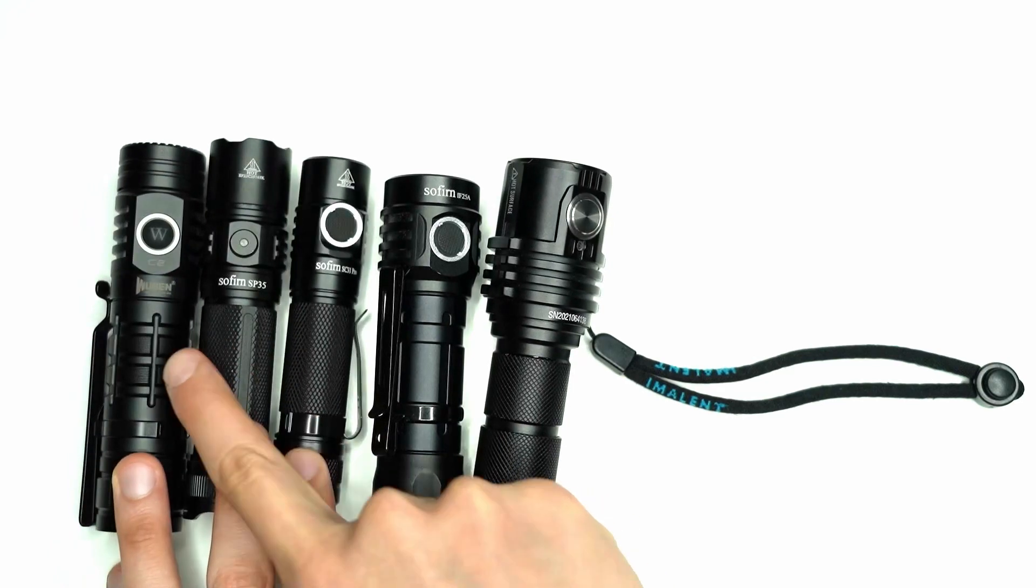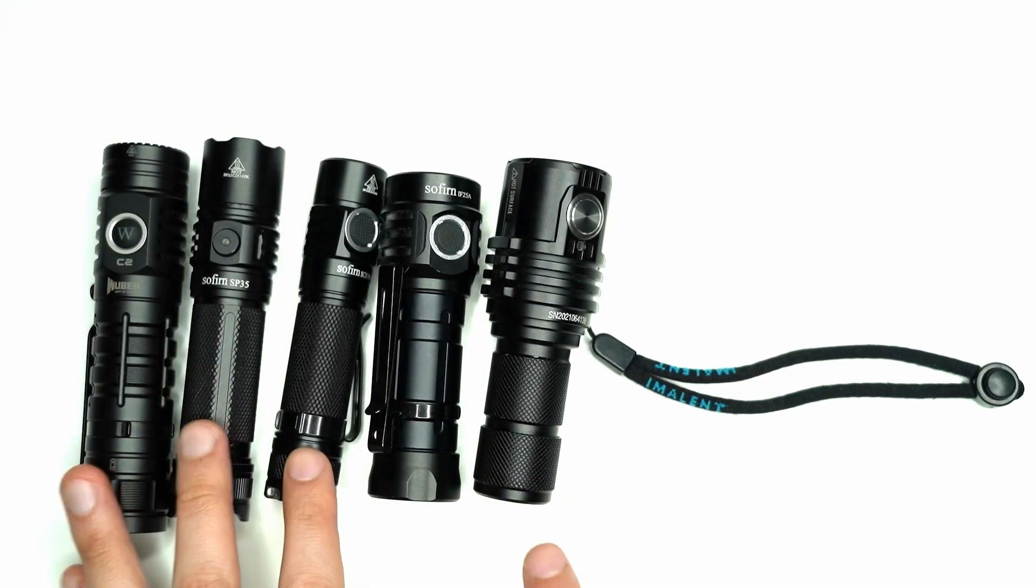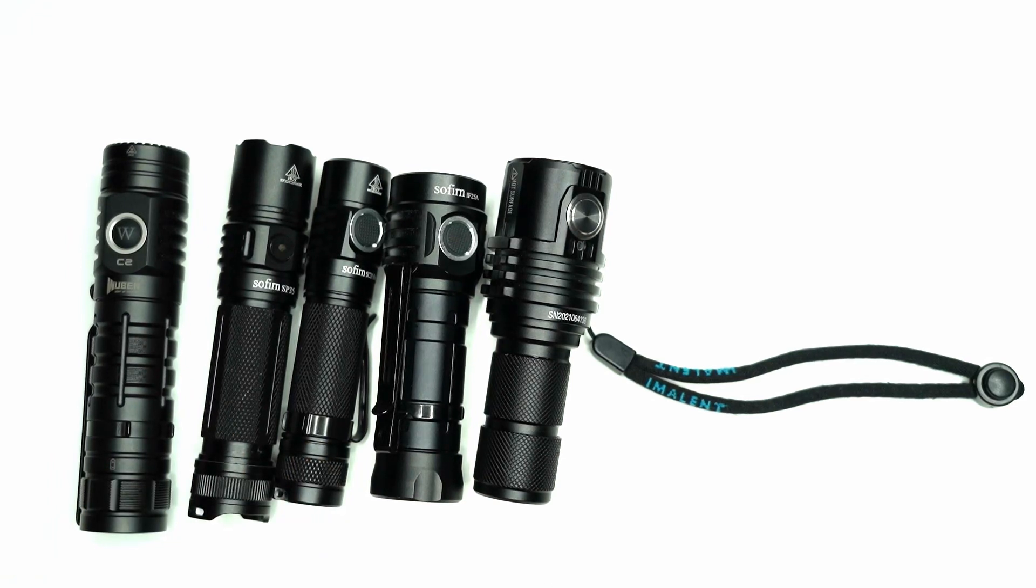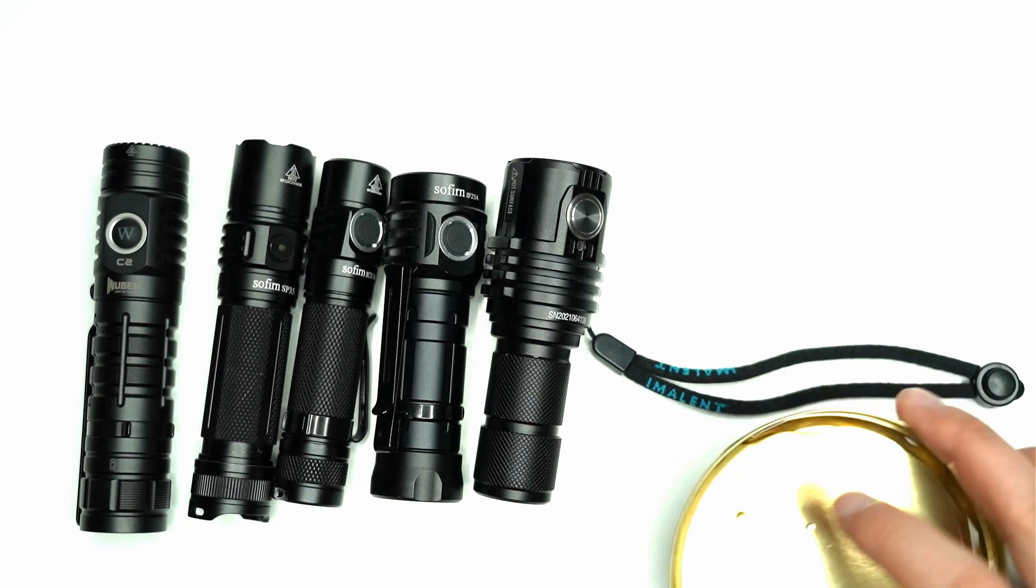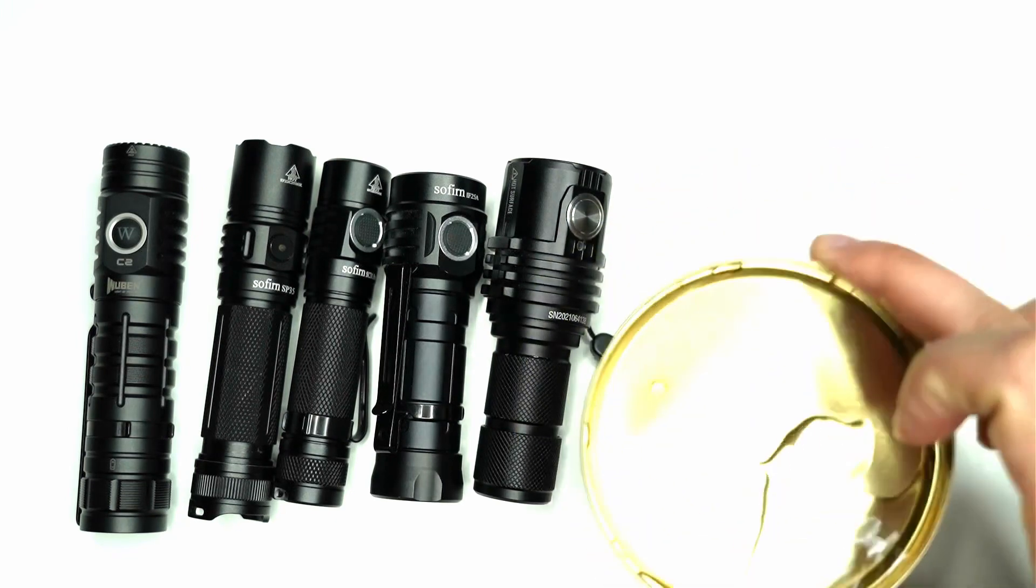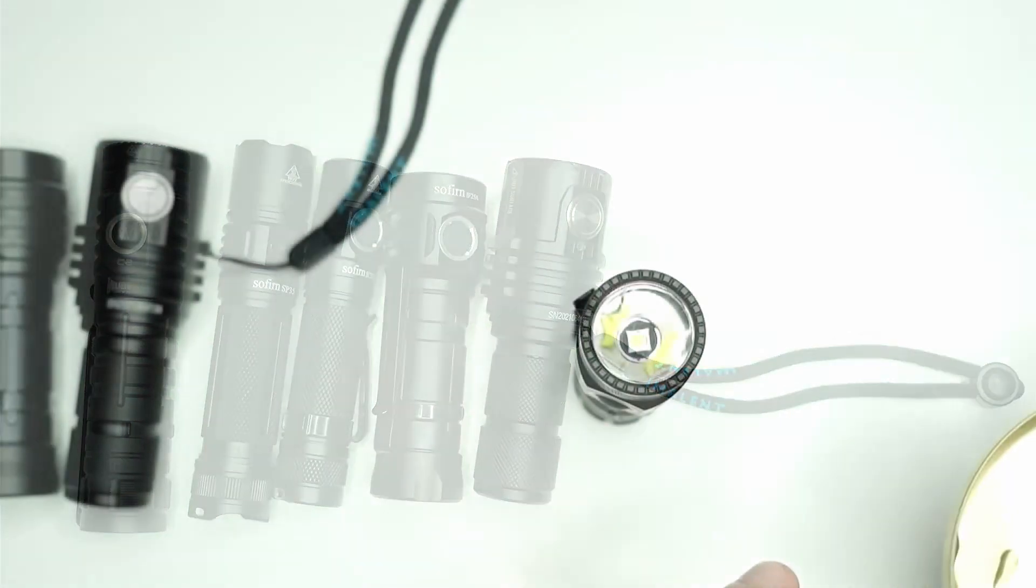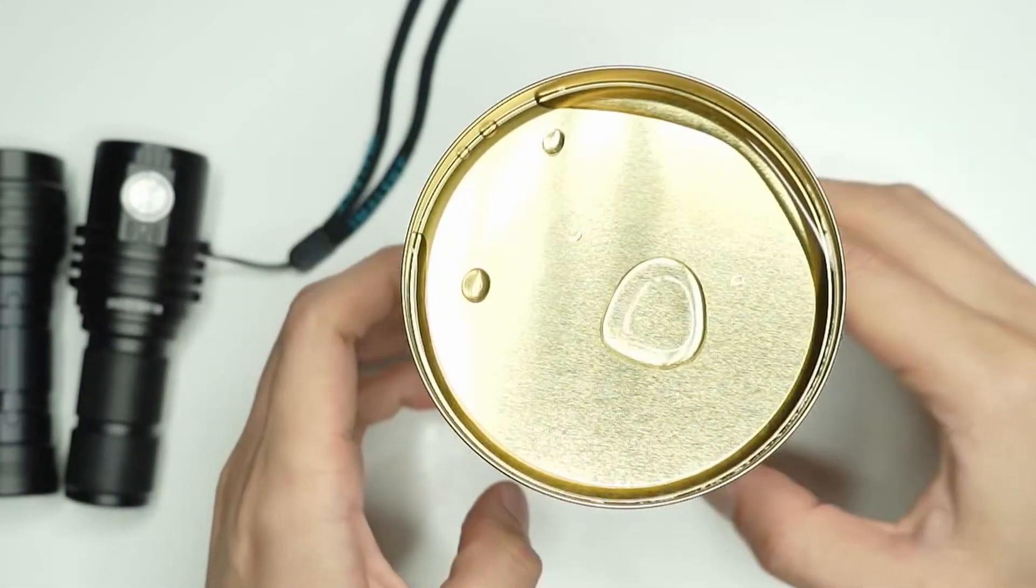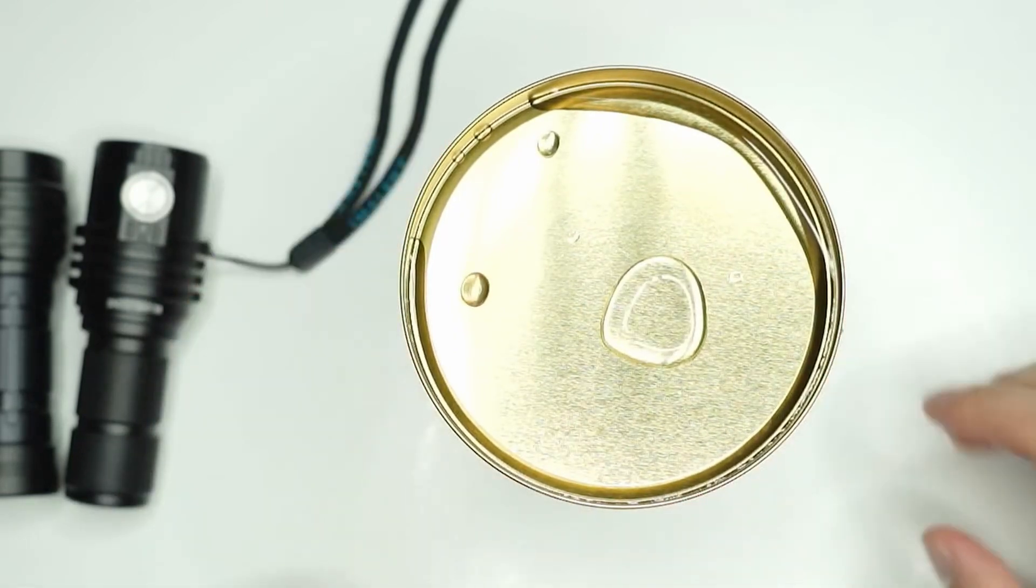Here we've got these three flashlights: the Sofirn SC31 Pro, SP35, and the Wurkkos C2, and these produce 2,000 lumens each. Let's give these a try and see how we go. I think aluminum is a pretty good conductor of heat and it's quite a thin piece of aluminum as well on this makeshift hot plate.